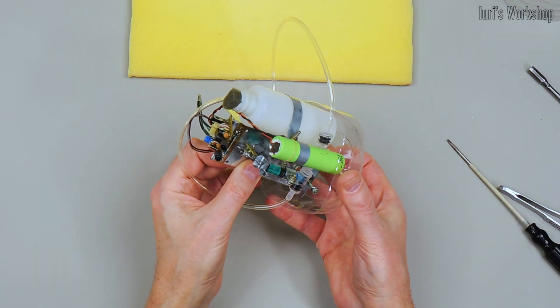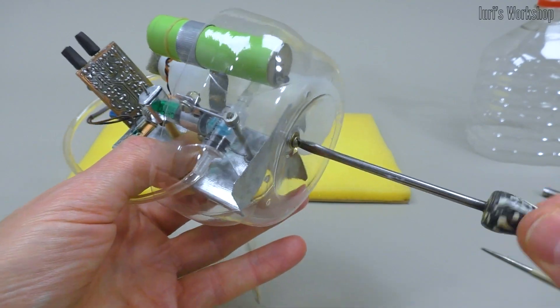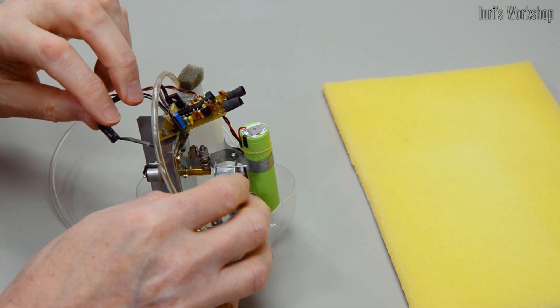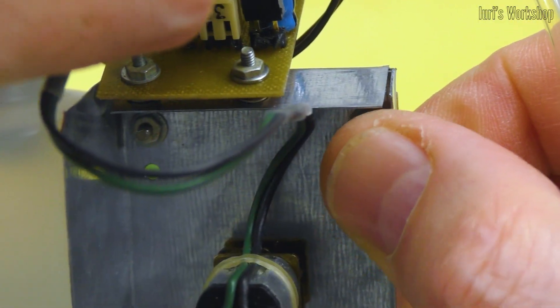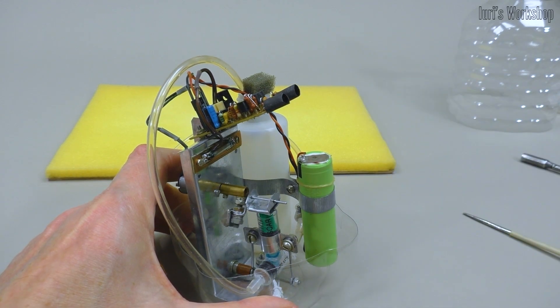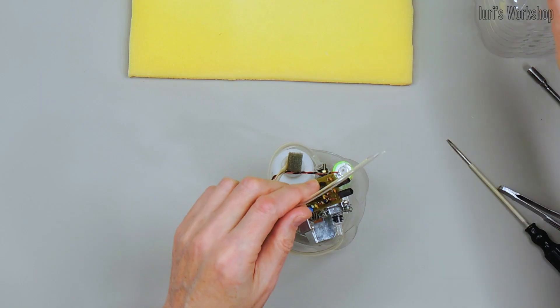The dispenser mechanism is attached to the body with just one screw. After connecting the power supply, you can check the operation of the mechanism.